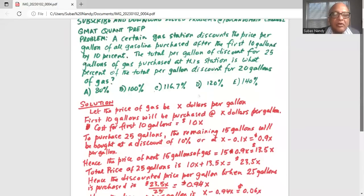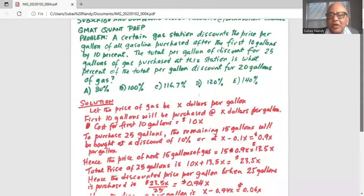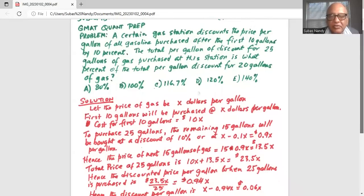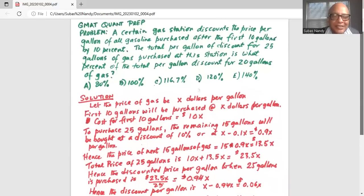Okay, so let the price of gas be X dollars per gallon. We do not know the price of the gasoline per gallon, so we will assume it is X dollars per gallon. First 10 gallons will be purchased at X dollars per gallon, so cost for the first 10 gallons will be 10X.